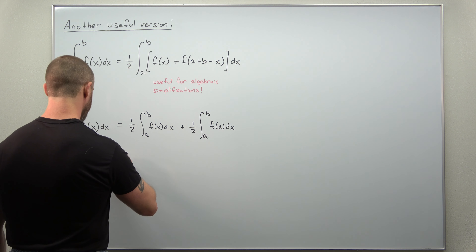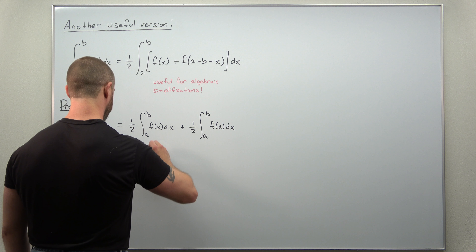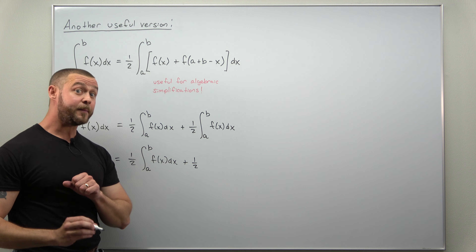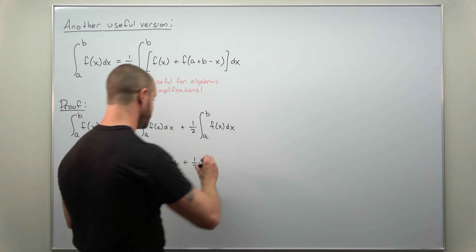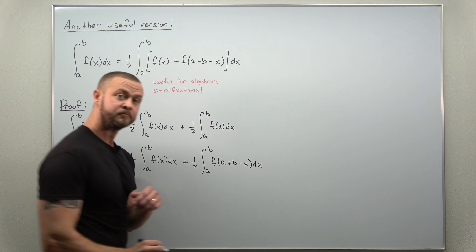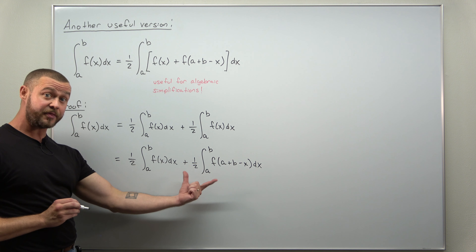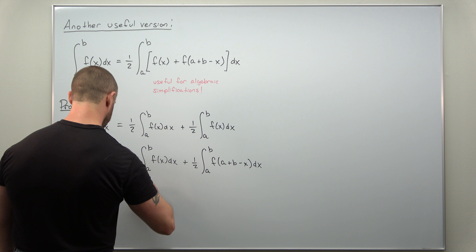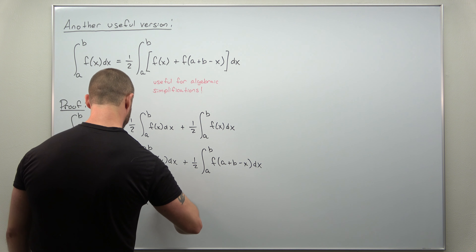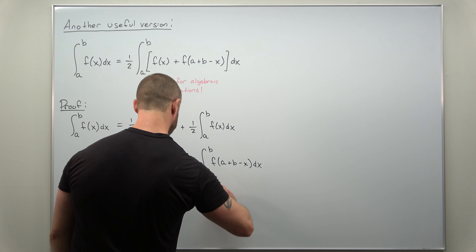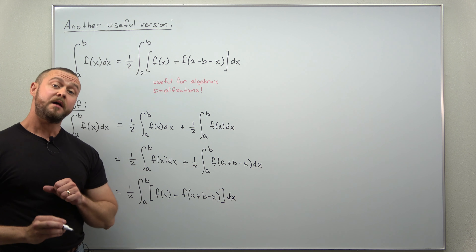The peculiar property lets us rewrite the second copy of the integral from a to b of f of x as the integral from a to b of f of a plus b minus x. Keeping the first integral the same and applying the peculiar property to the second, we get one half times the integral from a to b of f of x plus f of a plus b minus x. Combining these using basic properties of definite integrals and factoring out the one half completes the proof of this alternate version.